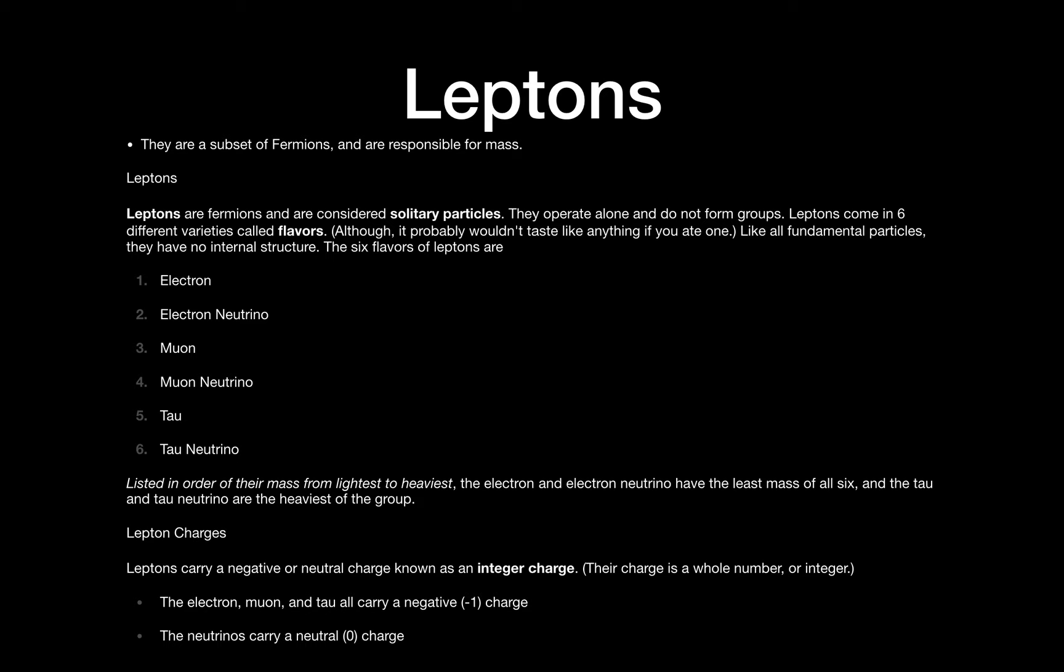All leptons either carry a negative or a neutral charge. You know from your previous understanding that electrons have a negative one charge, and the electron neutrino has a zero charge. They are neutral particles. The electron, muon and tau are all negative one. The neutrinos carry a zero charge. All of them have negligible mass and are often taken to have zero mass.